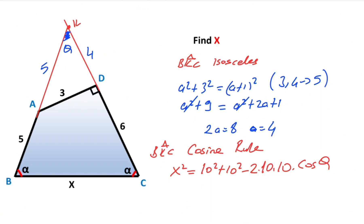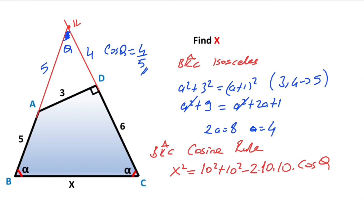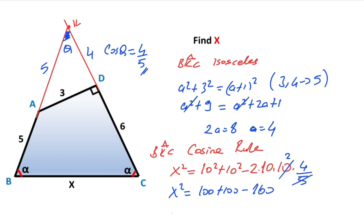If you focus on triangle KAD, for this triangle cosine theta equals 4 over 5. Therefore if we substitute this value into the equation and write 4/5, and simplify, we get x² = 100 + 100 − 160, which means x² = 40. So x is going to be 2√10.